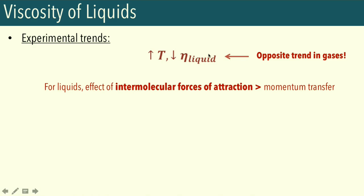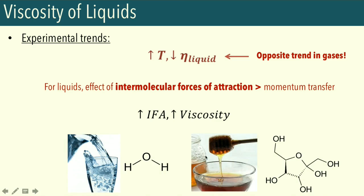This trend makes sense: increasing temperature gives molecules enough kinetic energy to partially escape intermolecular forces of attraction, but not enough for momentum transfer to dominate. Greater intermolecular forces of attraction mean greater viscosity. Water has only a couple of hydrogen bonding sites, while honey is made up of sugars with many OH groups that interact strongly. That's why honey is much more viscous, demonstrating the effect of intermolecular forces on liquid viscosity.